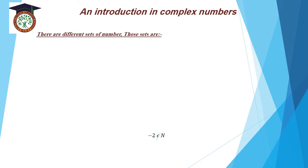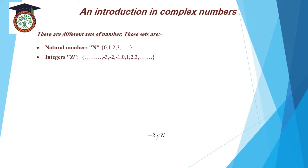There are different sets of numbers. These sets are natural numbers, N, equal 0, 1, 2, 3, and so on.